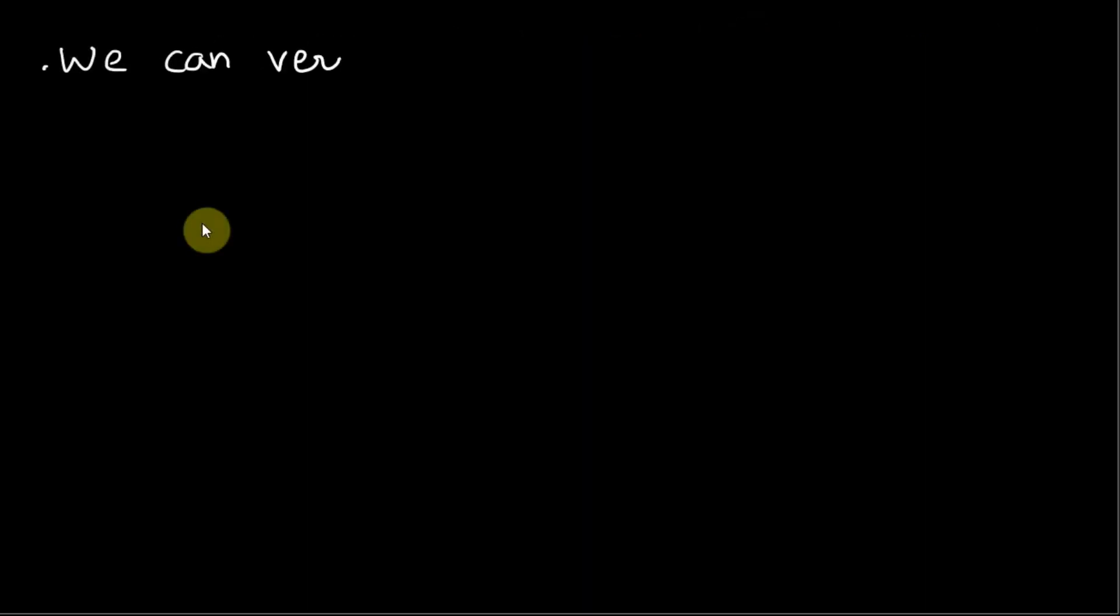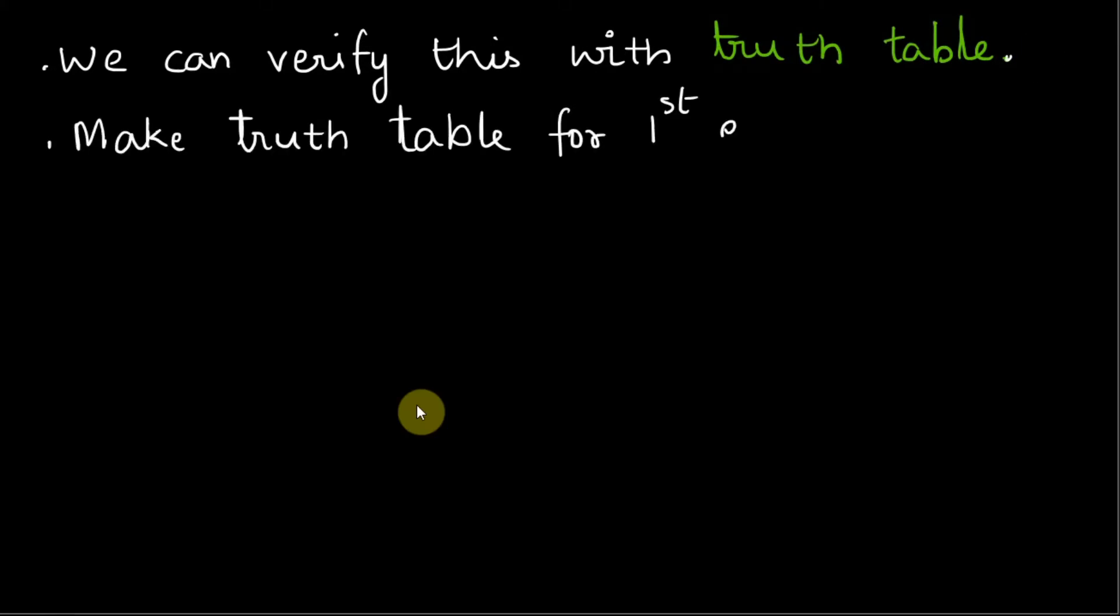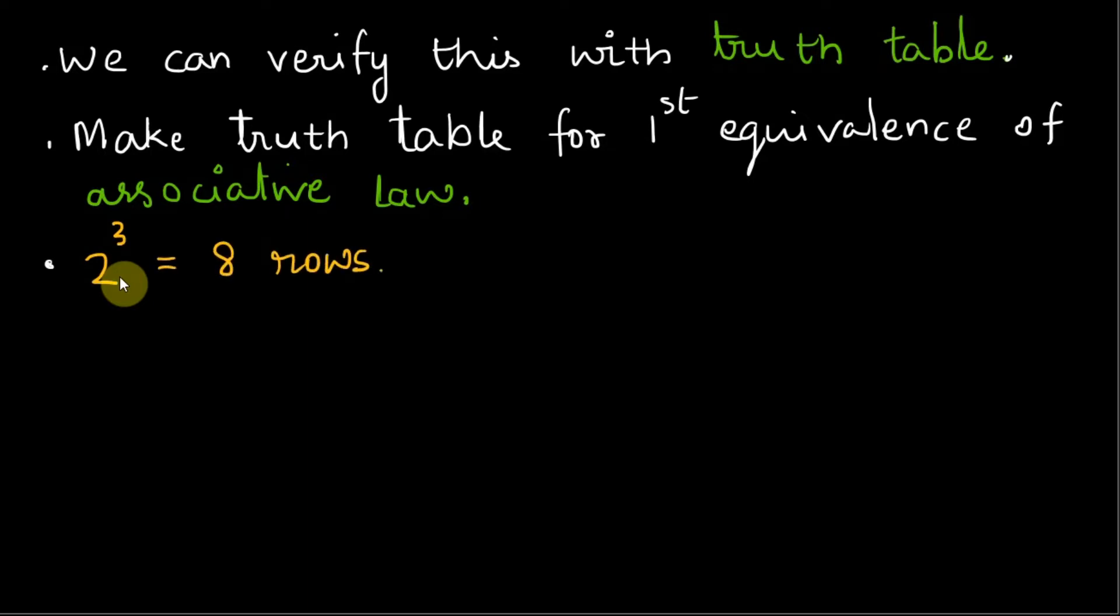We can verify this with the help of a truth table. First, we make a truth table for the first equivalence in associative laws. The truth table for associative laws will have 2 raised to 3 equals 8 rows because there are three variables.